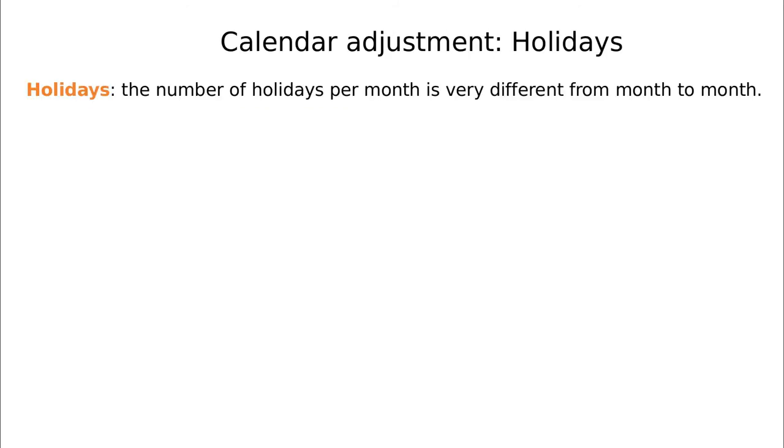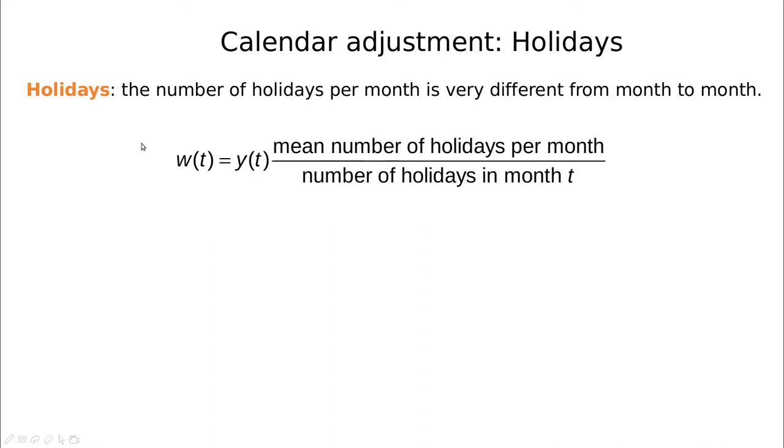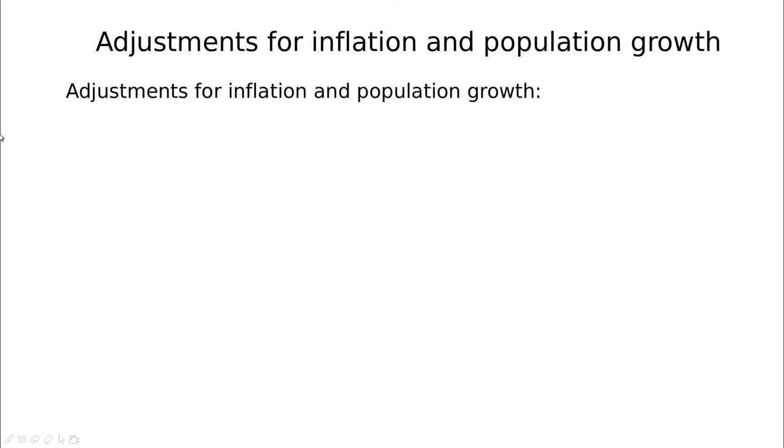Of course, there are other types of calendar adjustments. For instance, the number of holidays. Holidays are more or less like Sundays, so you have to correct for that. And again, you can define a new time series, which is the old one corrected by the proportional number of holidays per month.